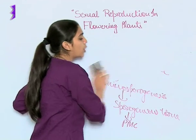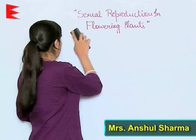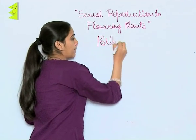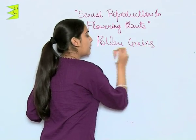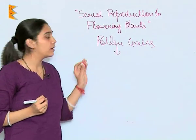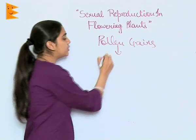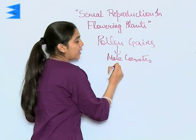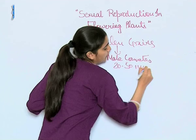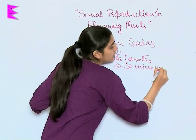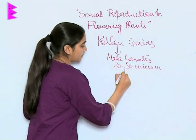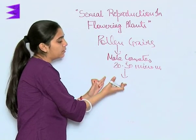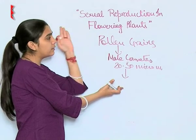Now let us understand what pollen grains are, what their structure is, and how they are formed. Pollen grains are nothing but male gametophytes, or we can say male gametes. They are 20 to 50 micrometers in size and are responsible for fertilization in plants.